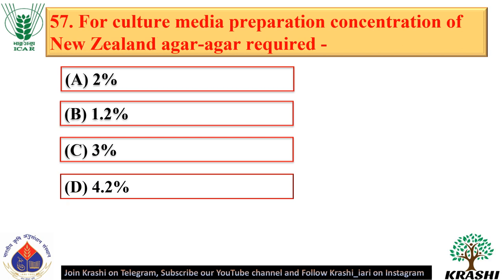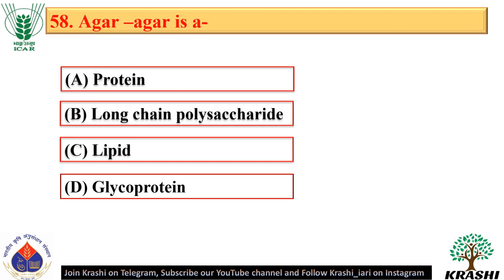Question number 57. For culture media preparation, the concentration of New Zealand agar-agar required is 1.2% — option B. Agar-agar is a long-chain polysaccharide.